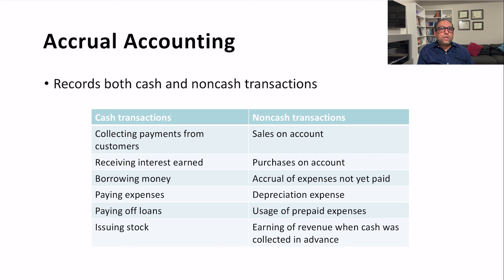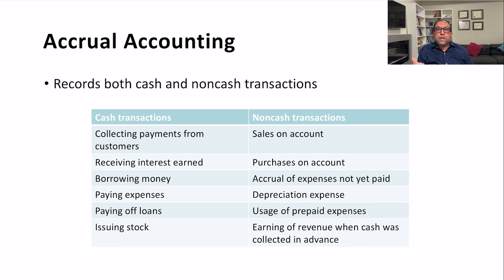Examples of cash transactions include: collecting payment from customers — debit cash, credit accounts receivable; receiving interest earned — debit cash, credit interest revenue; borrowing income — debit cash, credit loans payable; paying expenses — debit expenses, credit cash; paying off loans — debit loans, credit cash; and issuing stocks — debit cash, credit common stock. In all these, one account is always cash.